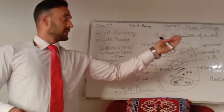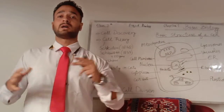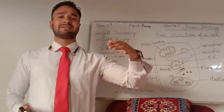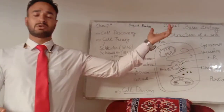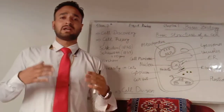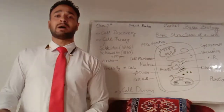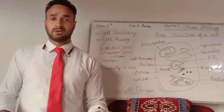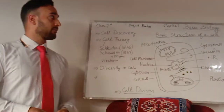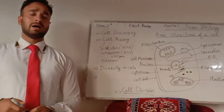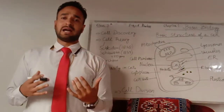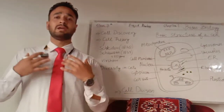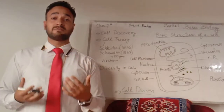Before going into detail about the basic structure of a cell — what is the composition of the cell, what are the different cell organelles — we should first know how we can know about the existence of the cell. The cell was already present, but how did we discover it? So let's talk about the discovery of the cell.